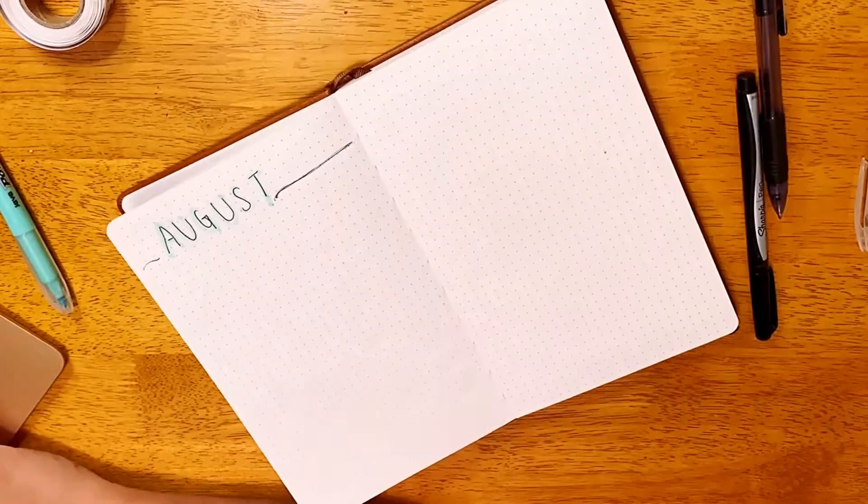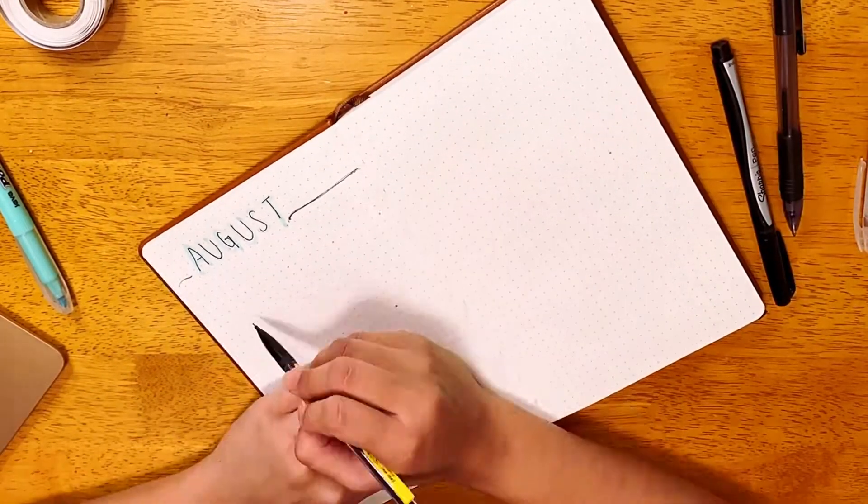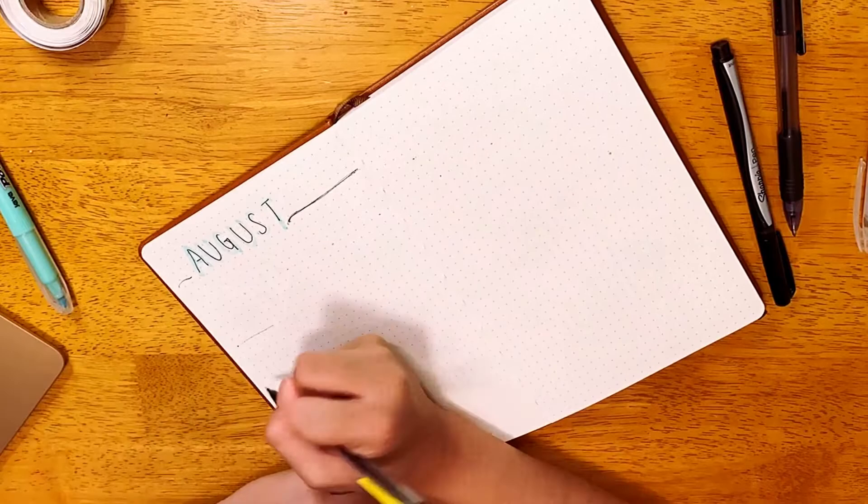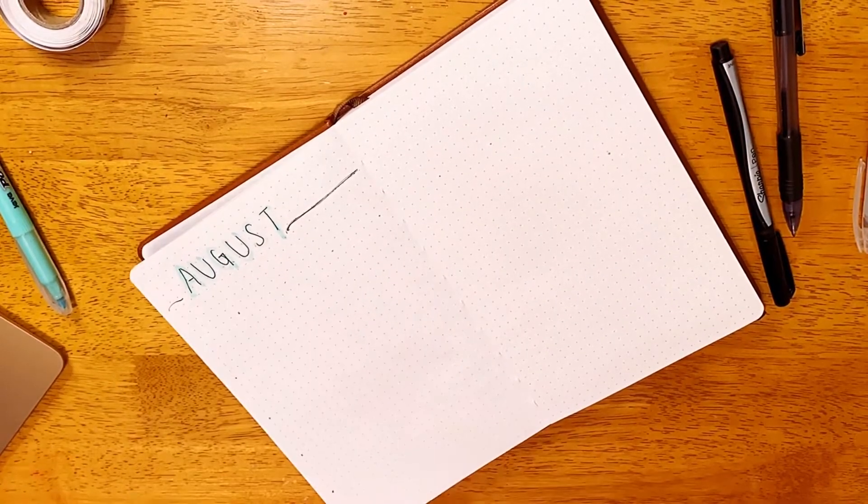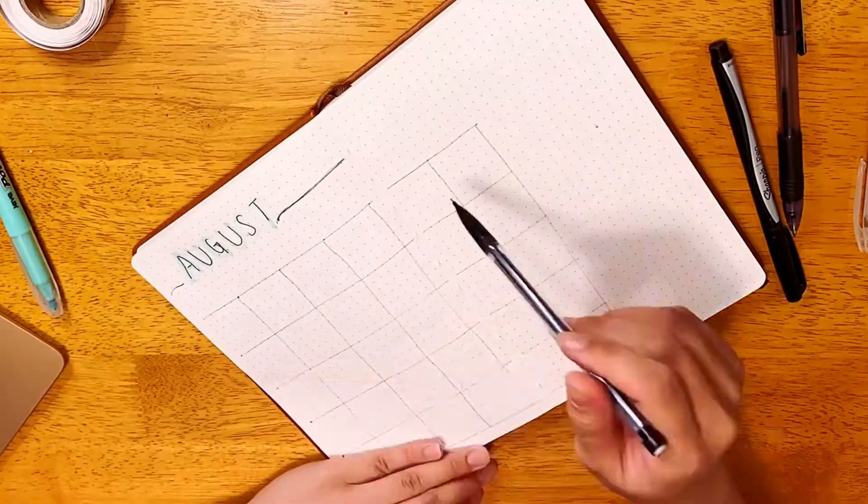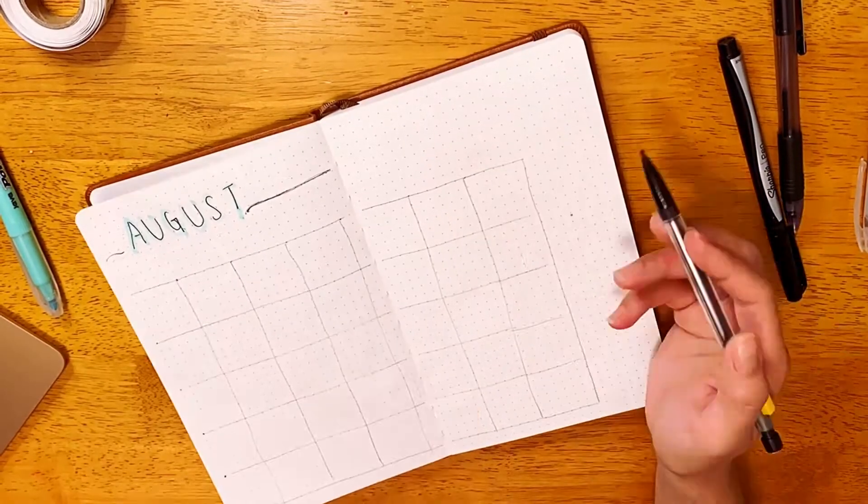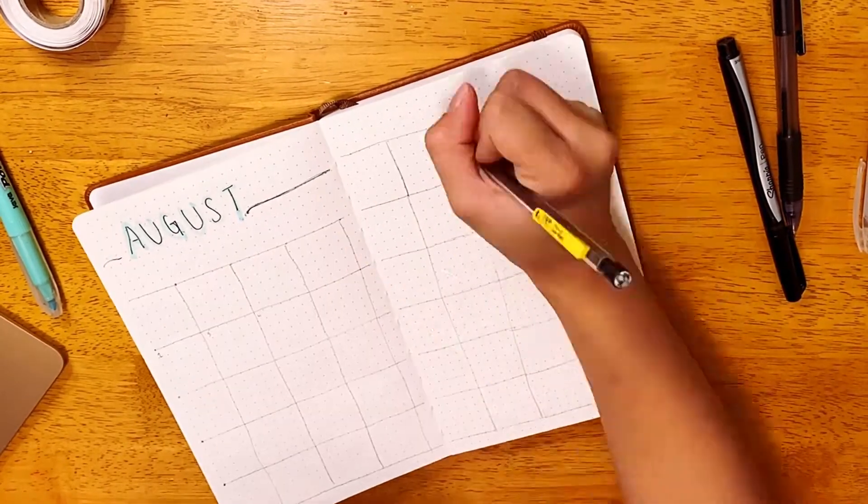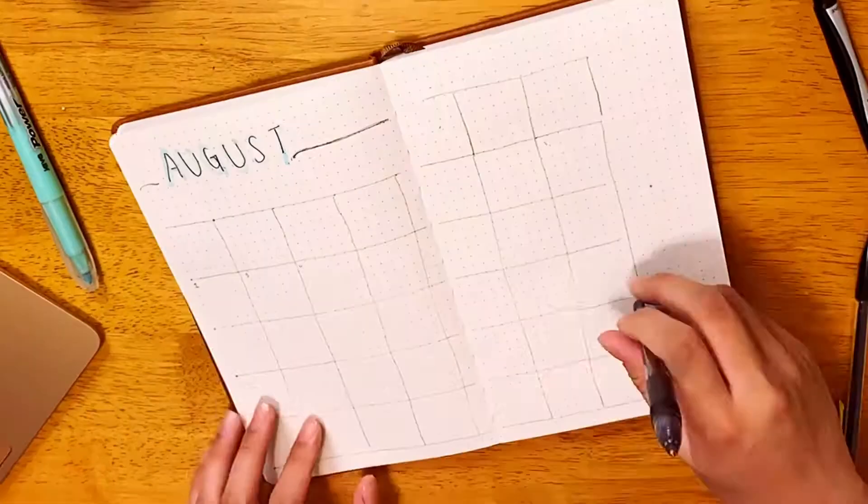I am now working on the calendar for August. And here again, I'm using a pencil because I really don't know like how much spacing or like how big or small I want the squares to be. Once I figured out the spacing and layout of the calendar, then that's when I went over with a pen.